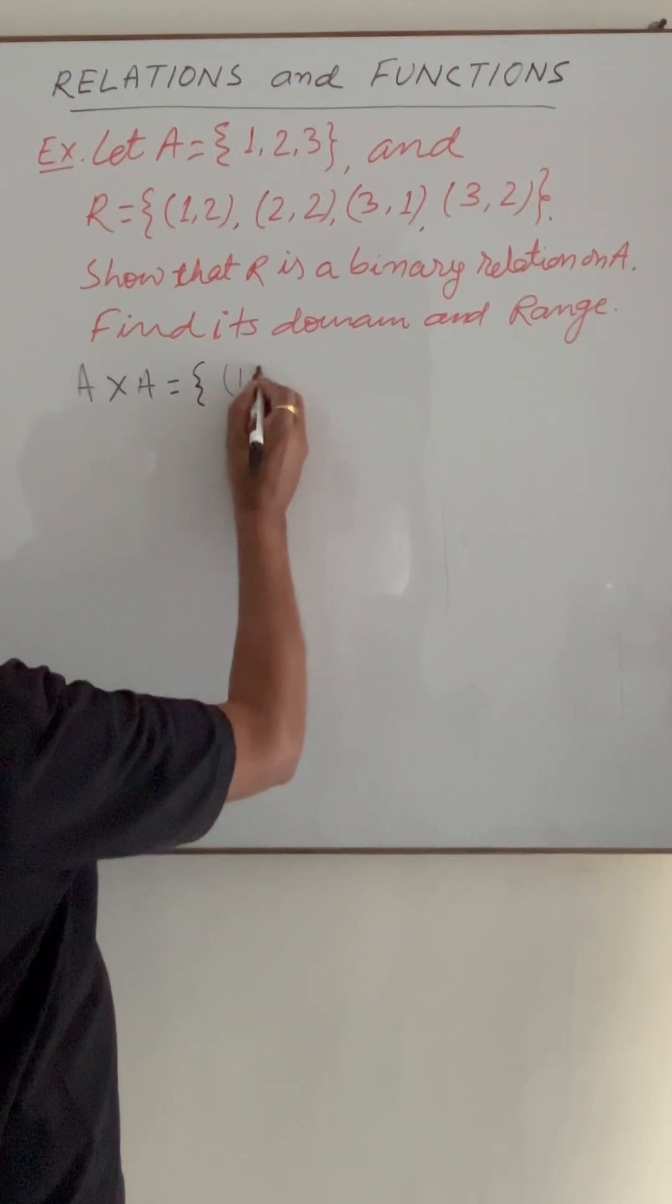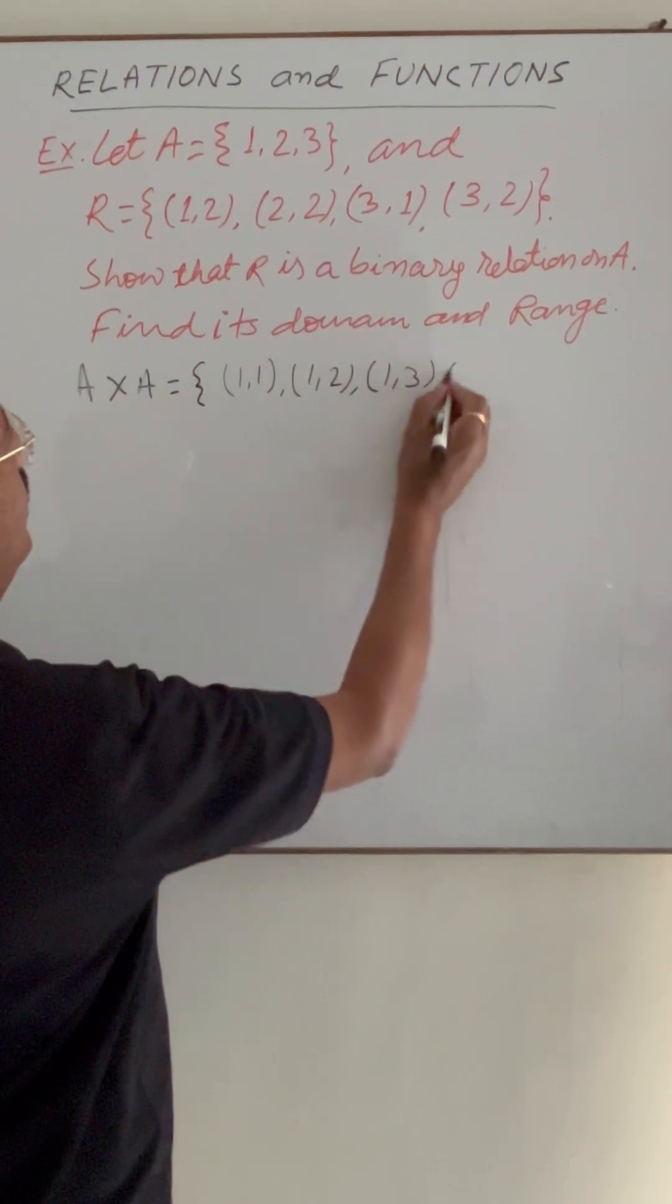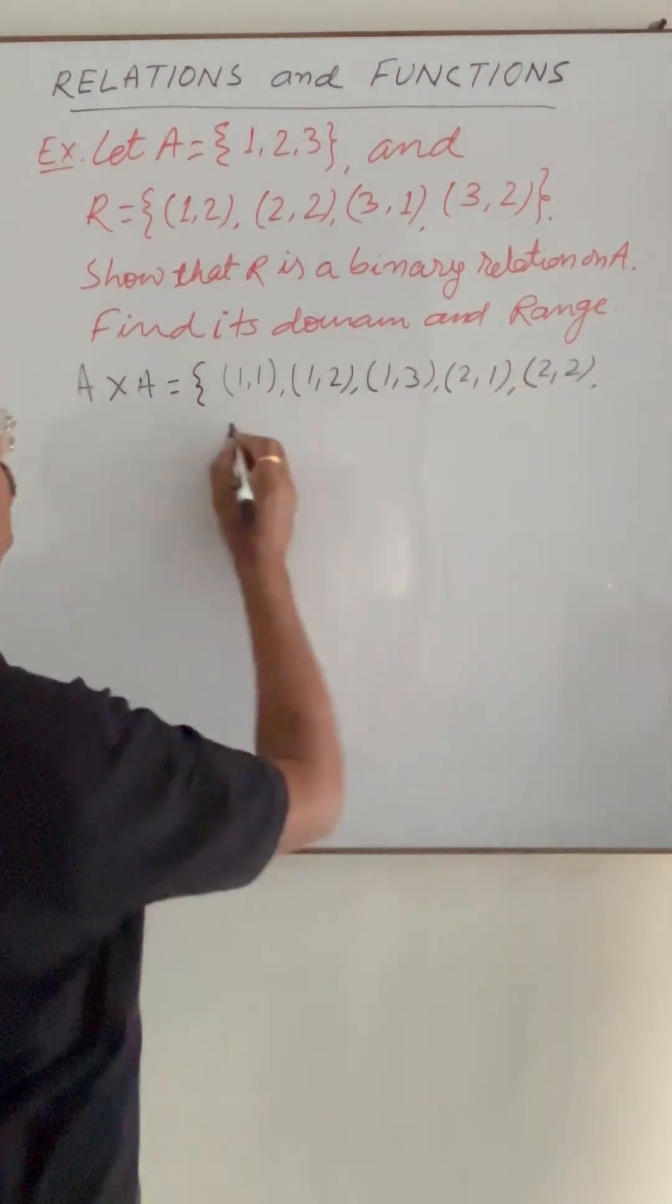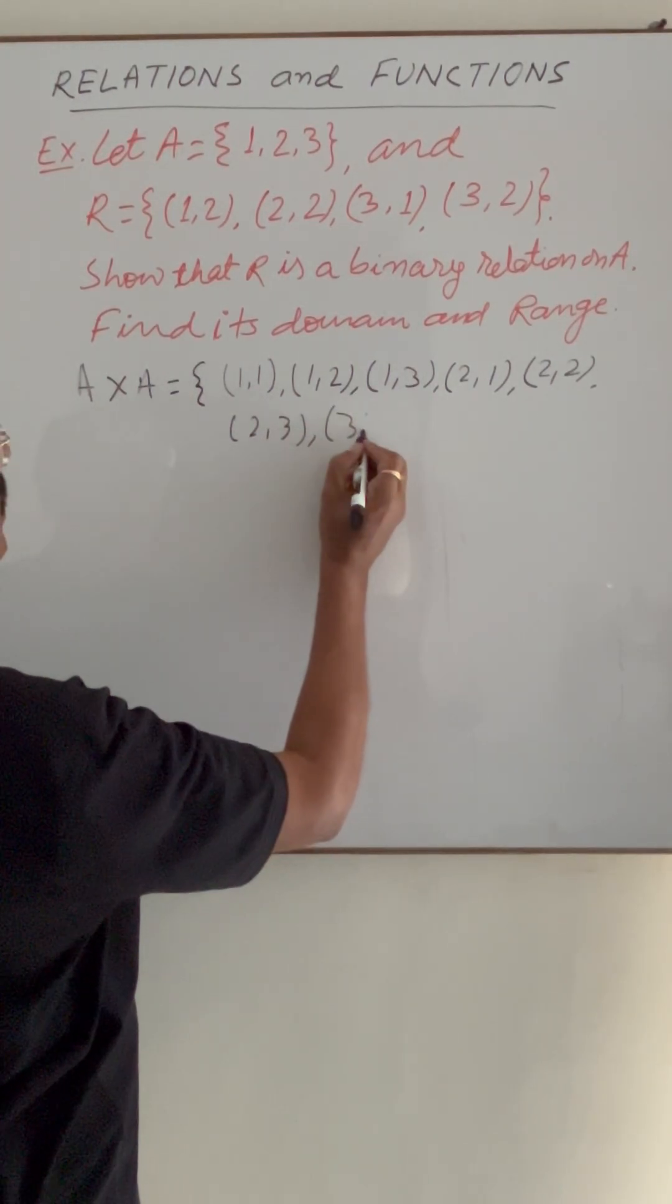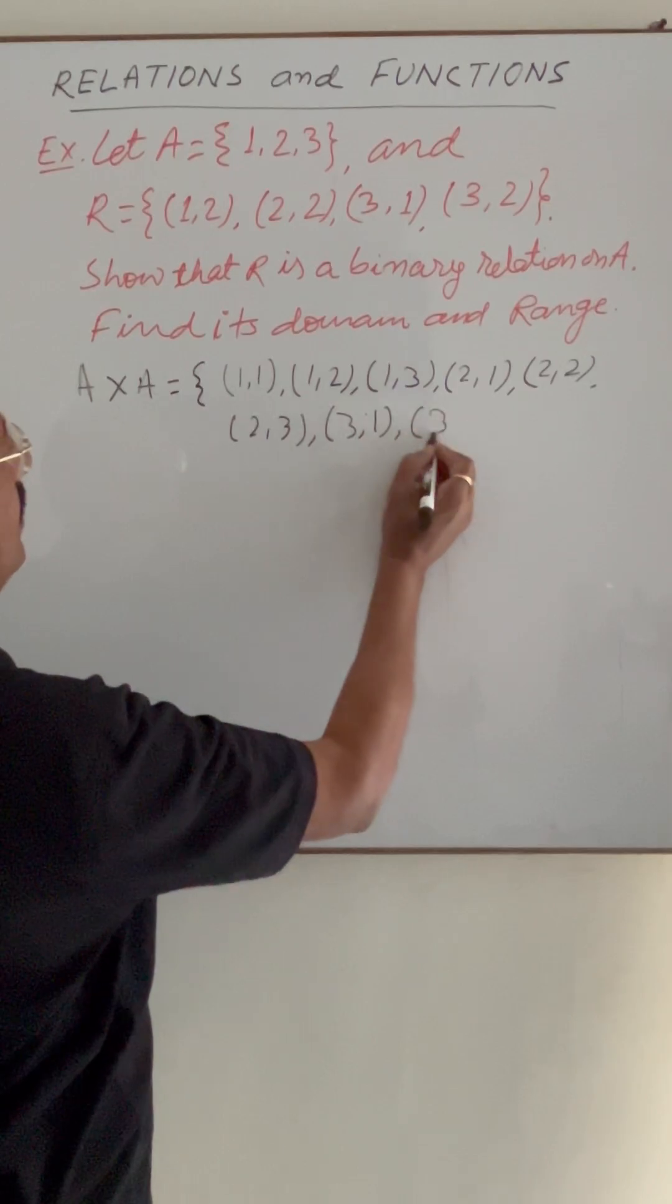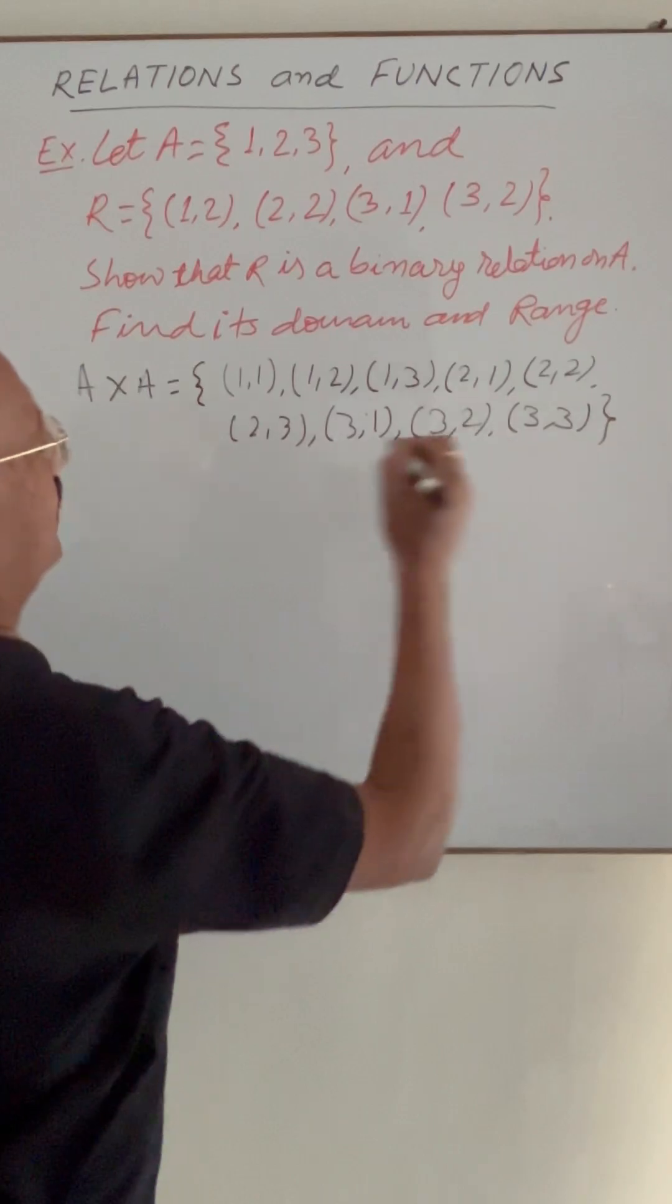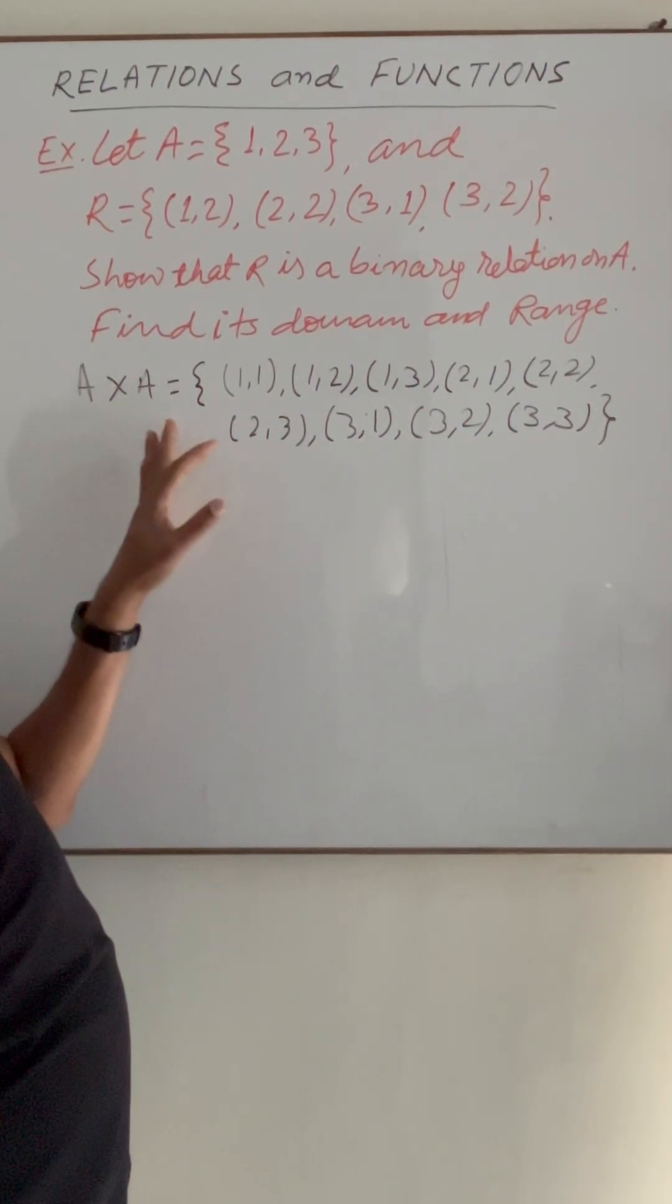These elements are (1,1), (1,2), (1,3), (2,1), (2,2), (2,3), (3,1), (3,2), and (3,3). These are the 9 elements of Cartesian product A with itself.